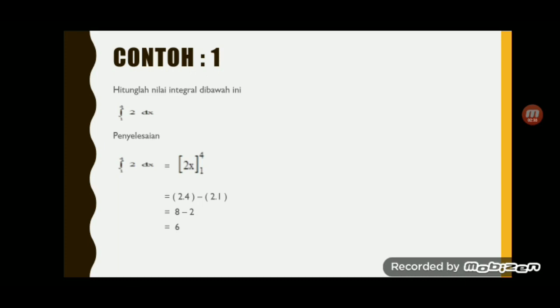Sehingga diperoleh 2 kali 4 adalah 8, dikurangi 2 kali 1 adalah 2. Berarti 8 kurangi 2 sama dengan 6.